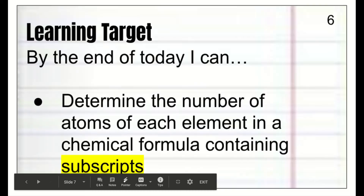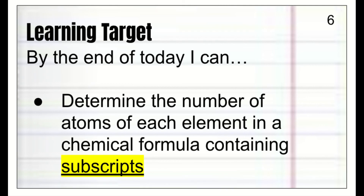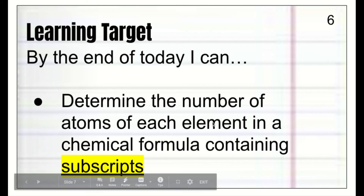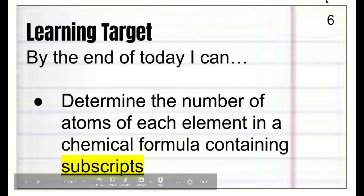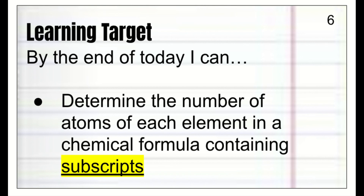So today what we're going to do is we're still determining the number of atoms of each element in a chemical formula containing subscripts, but now we're going to add a little more to that. If you had any issues with this yesterday, or if you struggled a bit, you have to let me know because we're building off of that. If you did not attend class yesterday, did not watch the videos, or did not complete yesterday's work, you need to go back and do 33A first before you even attempt 34A. All right guys, let's go ahead and get started.